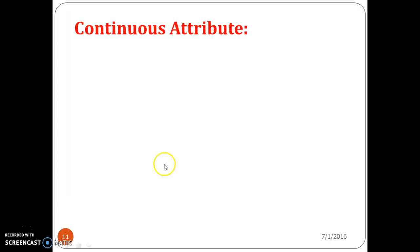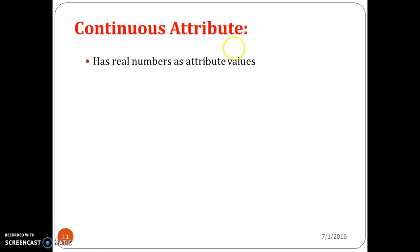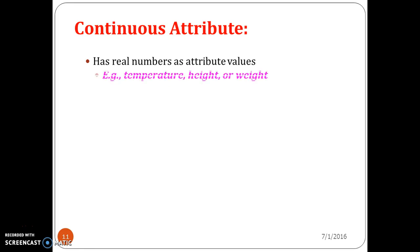Next is the continuous attribute. If an attribute is not discrete, then you call it a continuous attribute. The terms numerical attribute and continuous attribute are often used interchangeably in the literature — both go hand in hand. Examples of continuous attributes include temperature, height, and weight.